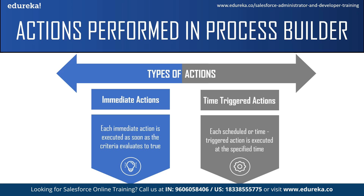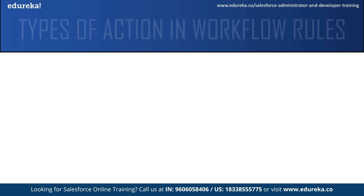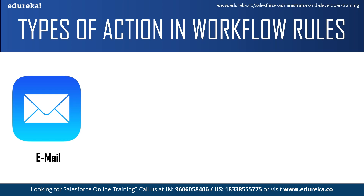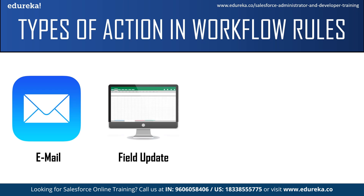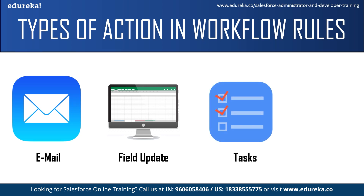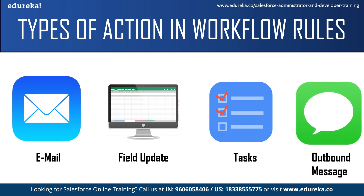There are four automated actions in workflow. The first is email — you can automate a workflow rule to send an email to one or more recipients when the criteria is met. Next is field update — field update actions let you automatically update a field value when a record is created or updated. Third is task — a task action determines the details of an assignment given to a specified user by an automated process; you can send a notification email to that assignee when a task is automatically assigned. The fourth is outbound message — this sends information in XML format to a designated endpoint like an external service, and is used when you integrate Salesforce with some external application.